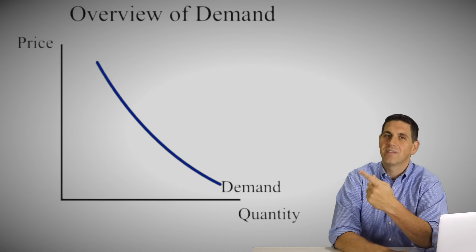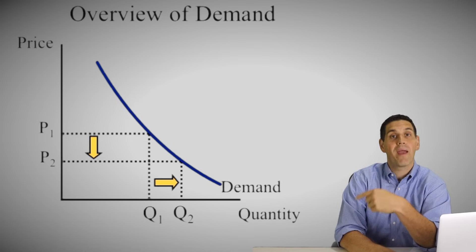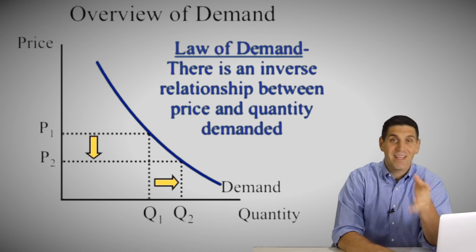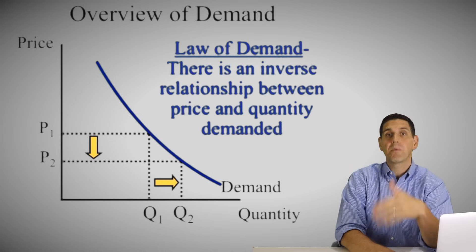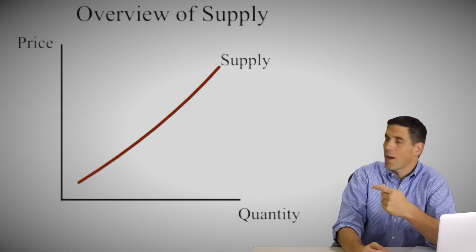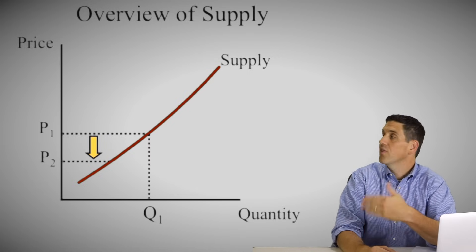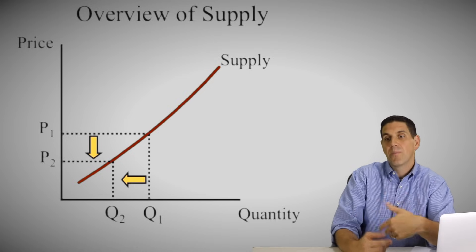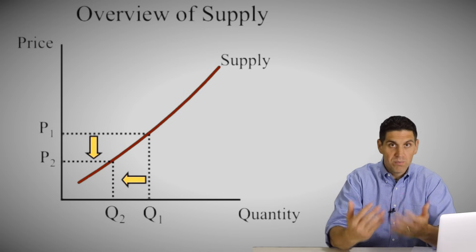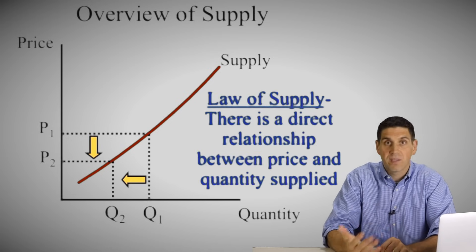As you already learned in class, the demand curve is downward sloping. When the price falls, the quantity demanded goes up — that's the law of demand. There's an inverse relationship between price and quantity demanded. When the price falls, people buy more; when the price goes up, people buy less. There's also a supply curve that goes up. When the price falls, the quantity supplied goes down, because producers have less incentive to produce. When the price goes up, producers produce more — that's the law of supply. There's a direct relationship between price and the quantity supplied.